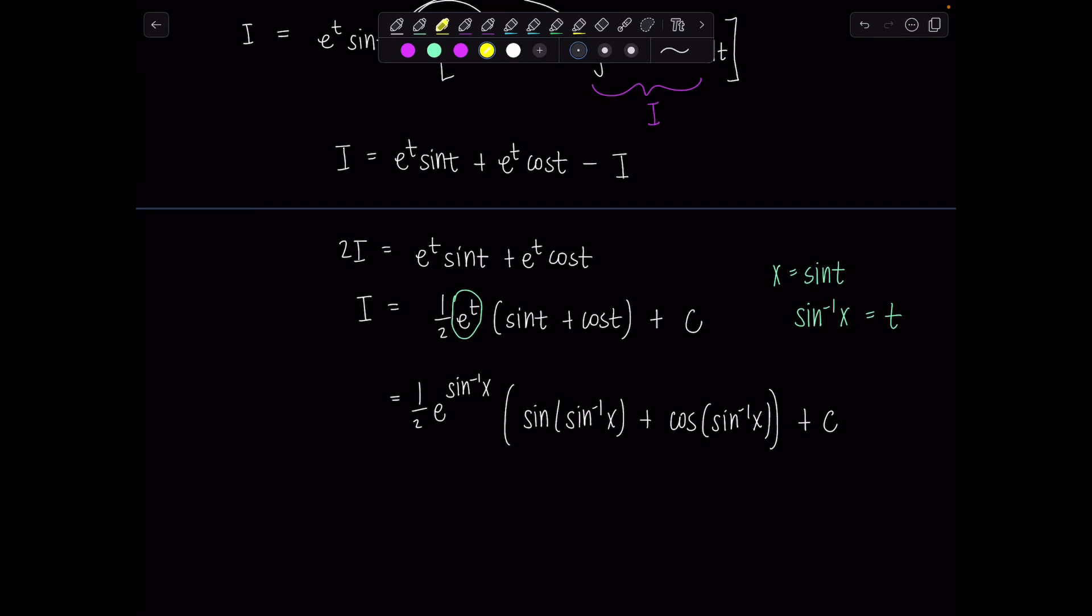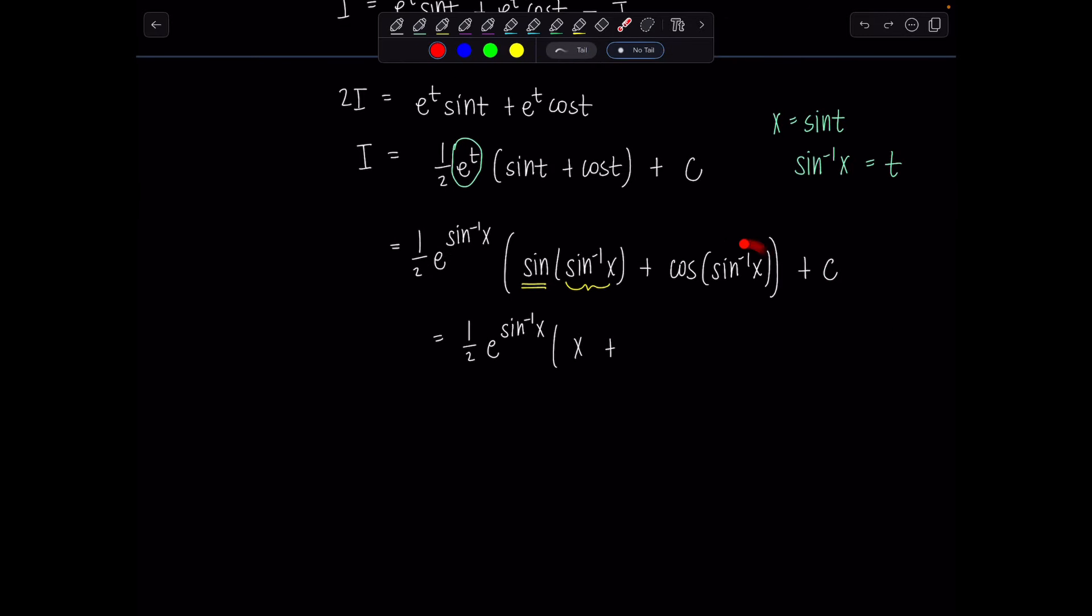We have 1 half e raised to the sine inverse of x times sine of sine inverse of x plus cosine of sine inverse of x plus c. And we need to simplify this completely. So as long as sine inverse of x is within the domain of sine. Domain of sine is all real numbers, so we're good there. This will just give us back x plus.